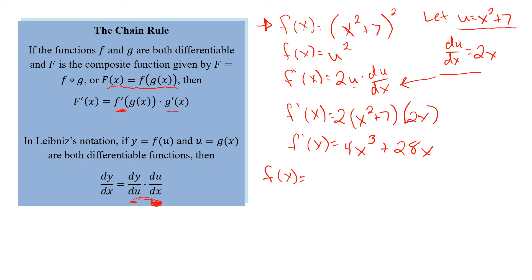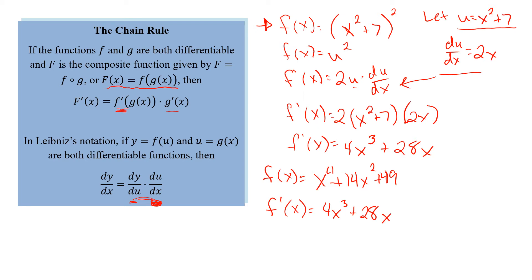Let's multiply this one out. We get f of x equals x squared plus 7 squared, which is x to the 4th plus 14x squared plus 49. Using the power rule, the derivative equals 4x cubed plus 28x. The 49 is a constant, so it goes away. Notice in both cases we got the same answer, which is good.